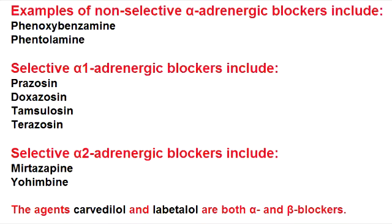Alpha-1 Selective Blockers. The Alpha-1 Selective Blockers include prazosin, terazosin, doxazosin, and tamsulosin. These are the drugs with the 'osin' ending.